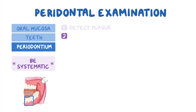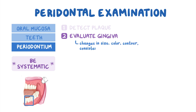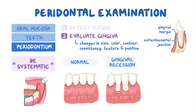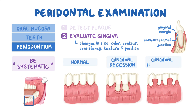The next step is the evaluation of the patient's gingiva, which includes visual inspection and palpation. The goal is to identify changes in size, color, contour, consistency, surface texture, and position. Normally, the gingival margin lies slightly coronal to the cementoenamel junction, but with gingival recession it shifts apical to the cementoenamel junction. In gingival hyperplasia, the gingival margin shifts even more coronal to the cementoenamel junction.